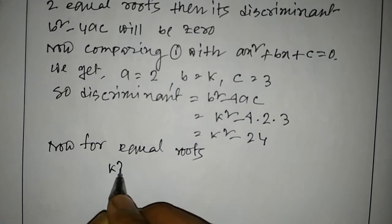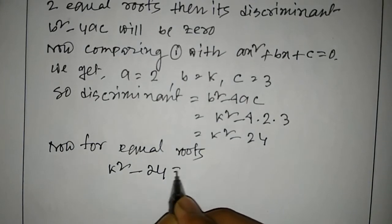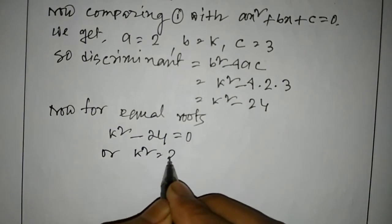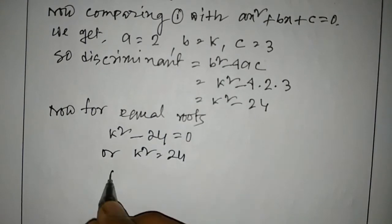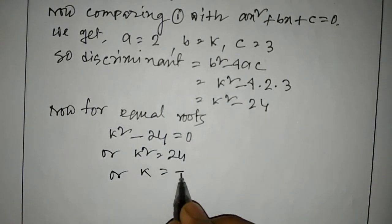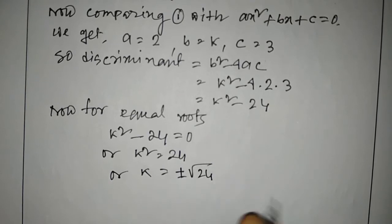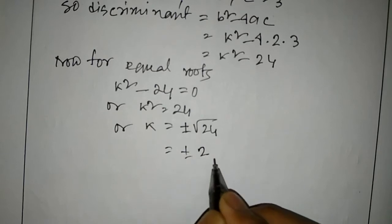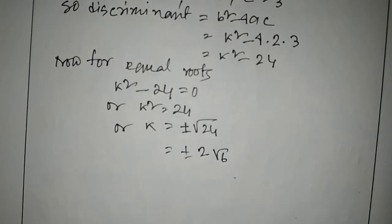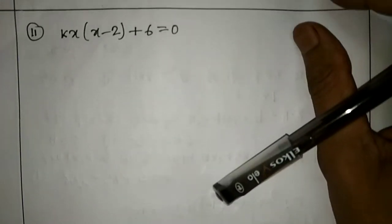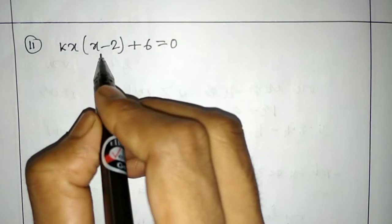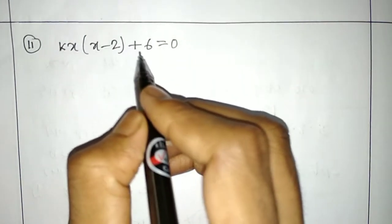For equal roots, k squared minus 24 will be 0, or k squared equals 24, or k equals plus or minus root 24, which is plus or minus 2 root 6.